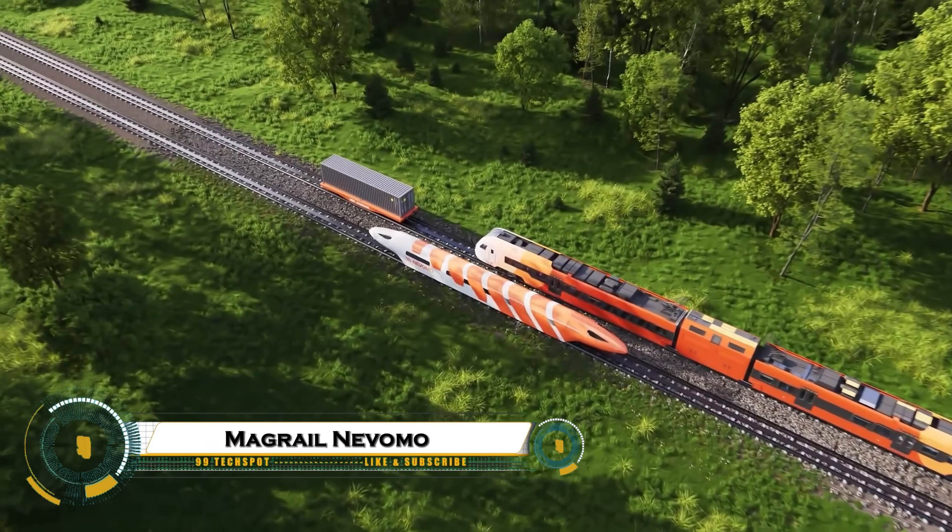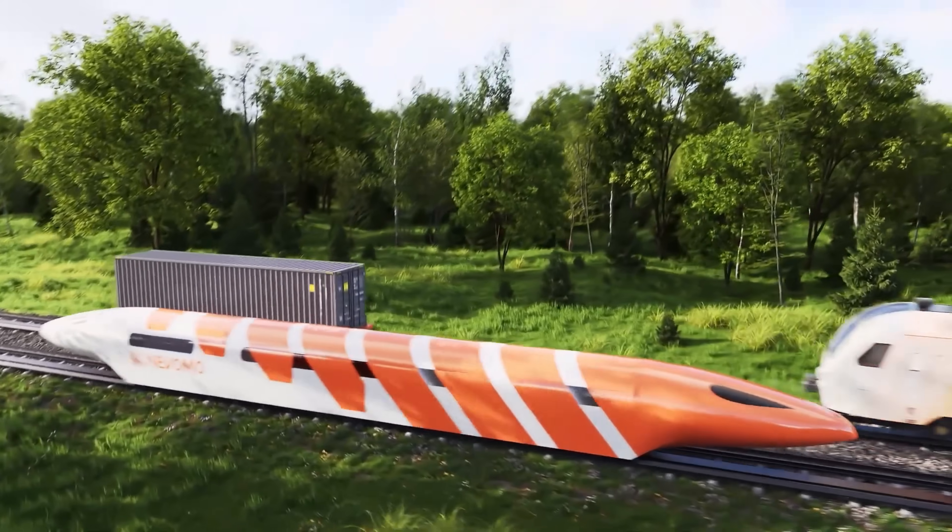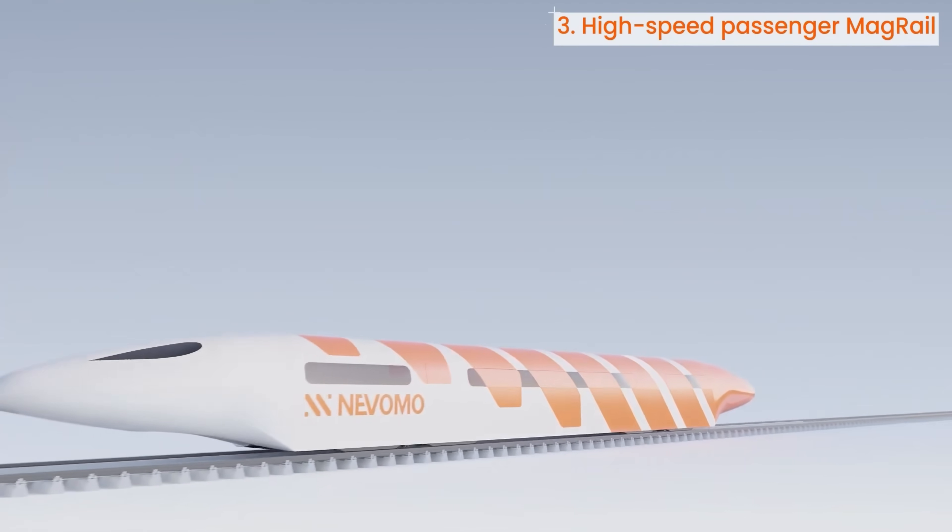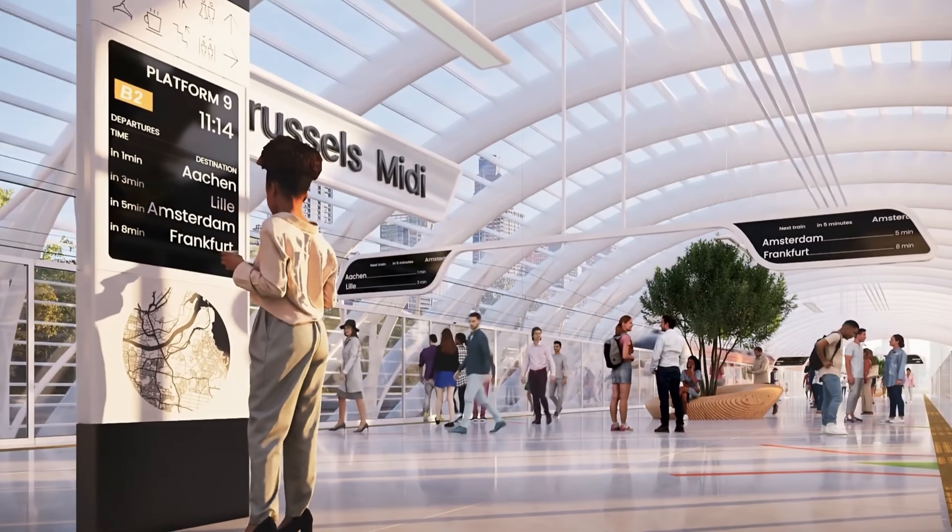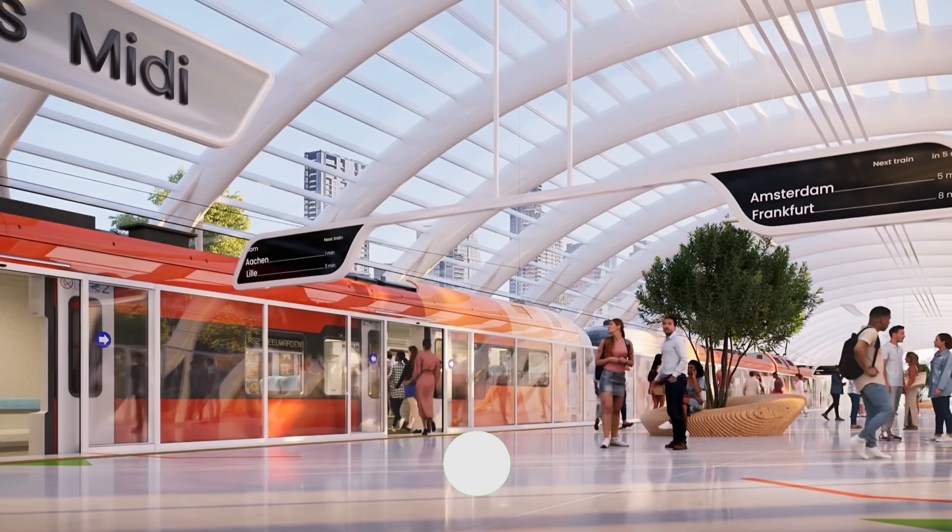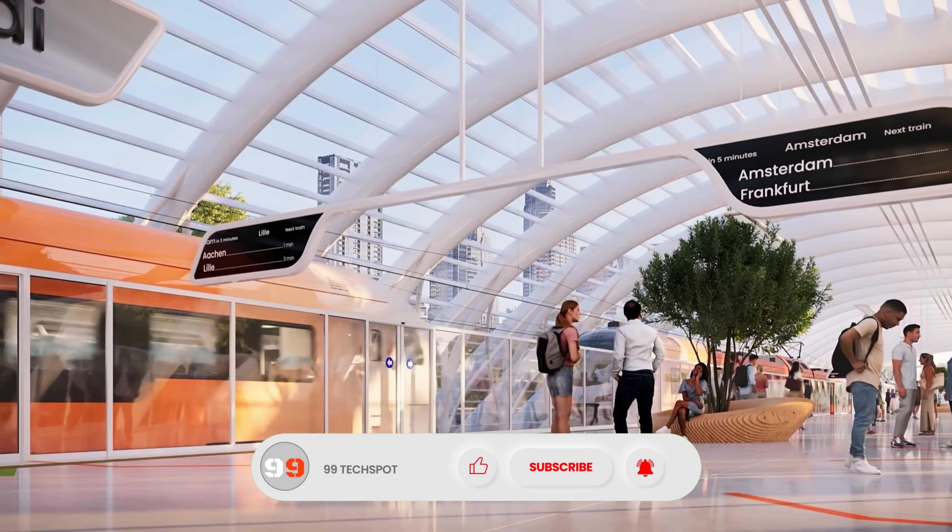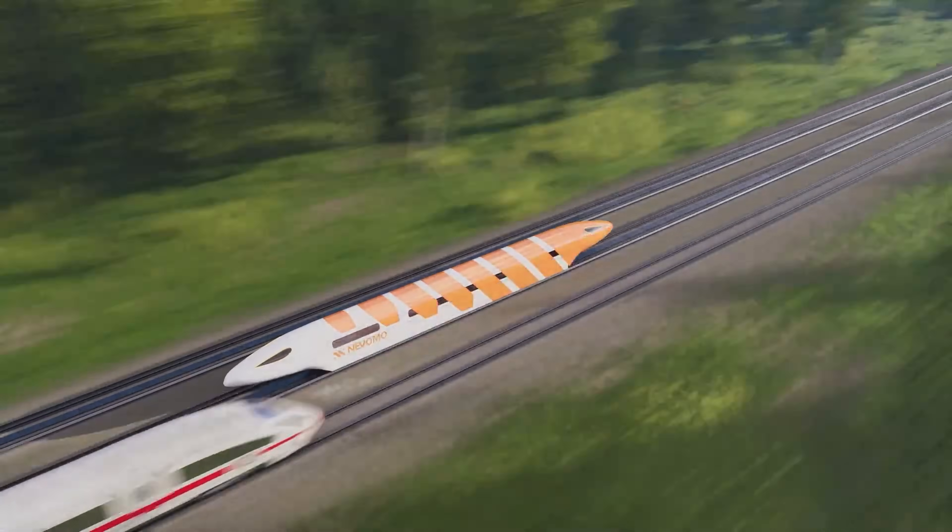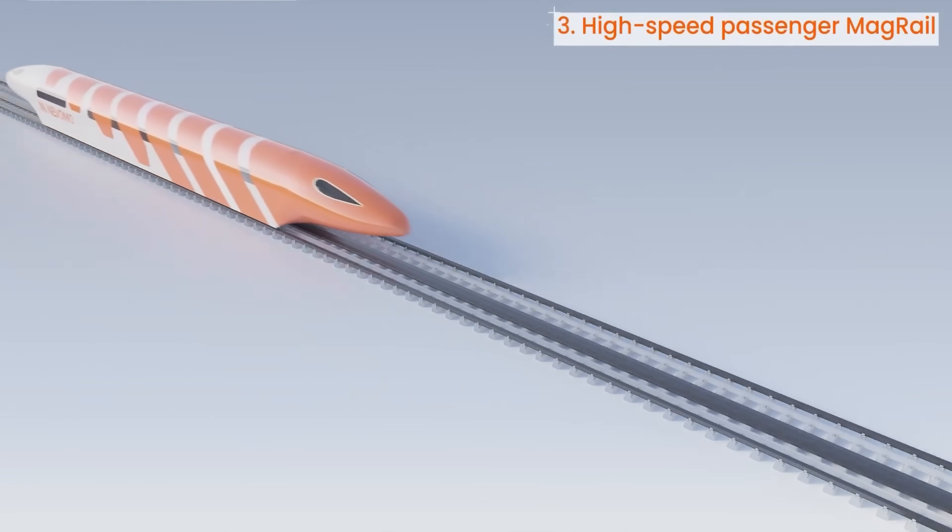Novomo is pioneering MagRail, an innovative magnetic levitation train system designed to retrofit existing railways. Using passive magnetic levitation and linear motors, MagRail enables trains to hover above tracks, reducing friction and allowing higher speeds and greater energy efficiency. Tested on Europe's longest maglev track in Poland, Novomo's technology has achieved speeds over 135 kilometers per hour, with goals of reaching 550 kilometers per hour.